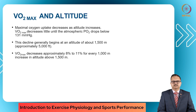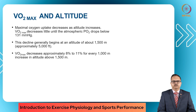The maximum oxygen uptake decreases as altitude increases. However, until the atmospheric PO2 drops below 131 mmHg, VO2 max has no effect. That means until about 1500 meters, VO2 max remains normal, and beyond 1500 meters of altitude, VO2 max starts to drop.